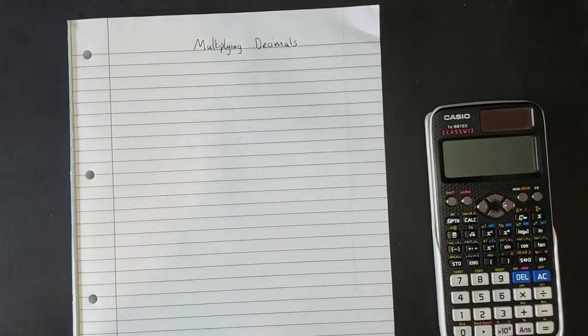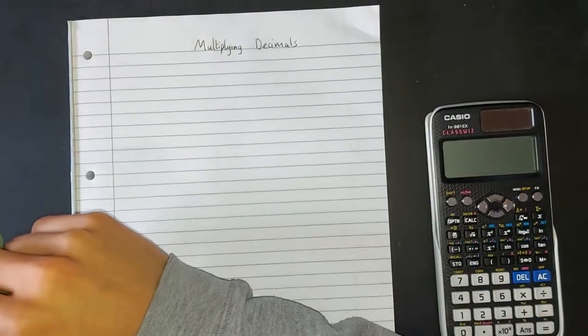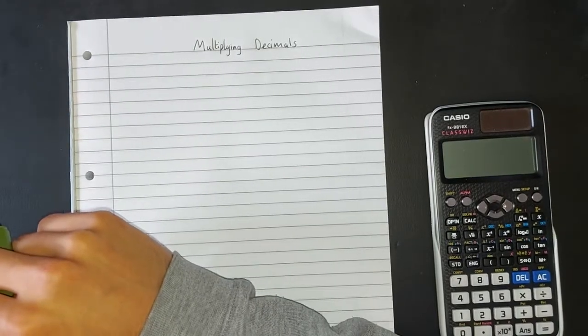Okay, we're going to be carrying on looking at decimals. This time we're going to look at a method for multiplying together two decimal numbers.